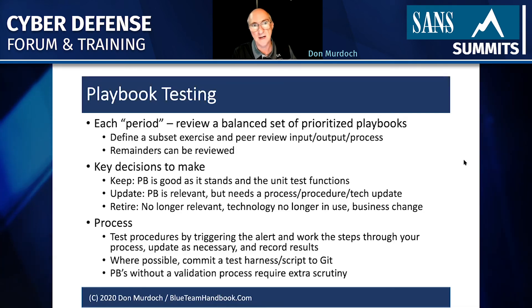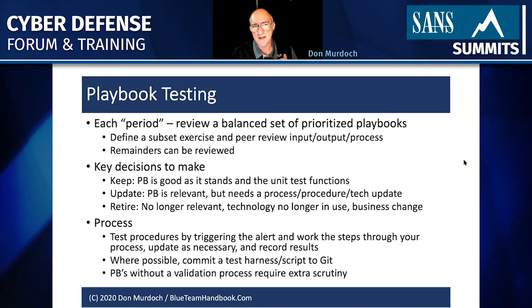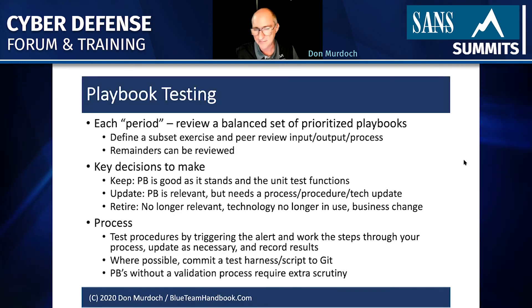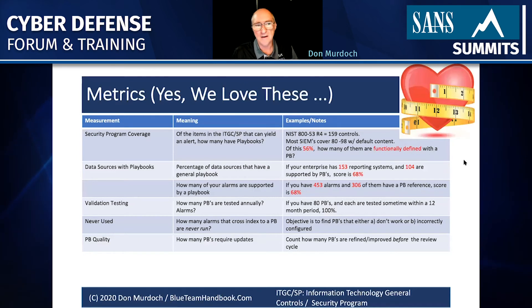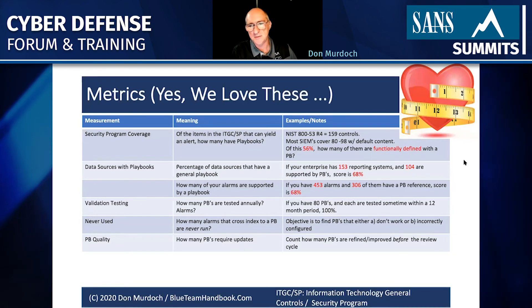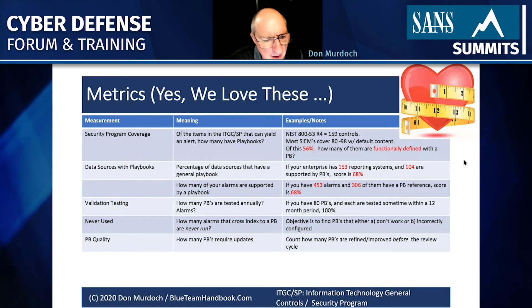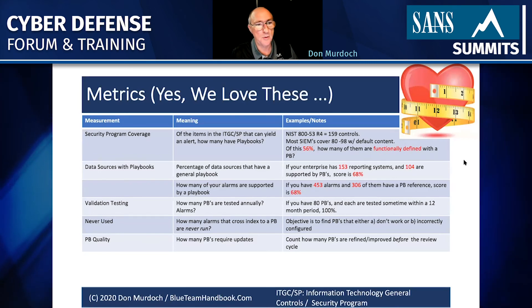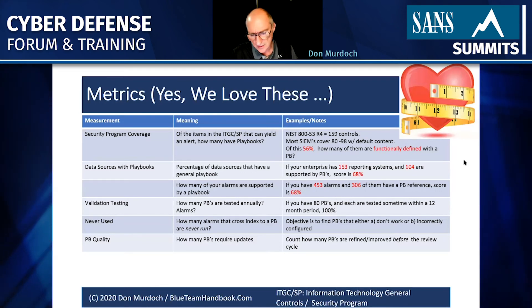You want to organize this data, test it, use dates as attributes of playbook development and validation, and use criticality to help drive that process. For metrics — think about your security program and how many controls you have. Many SIEM platforms have content that maps to NIST 800-53. If you have a certain percentage of control functions, how many of them actually have a playbook? That measures your ability to answer the mail on that. Also think about validation testing: how many do you test per quarter?